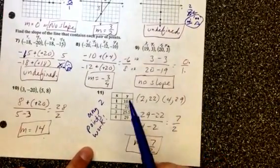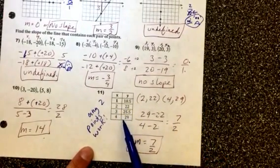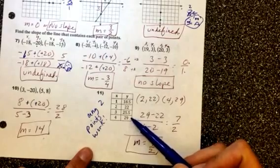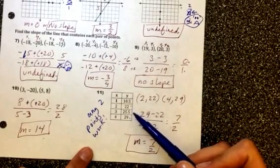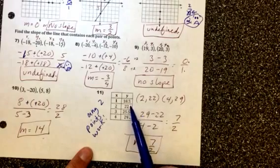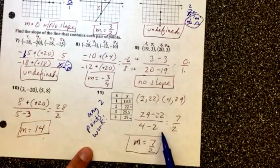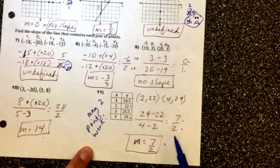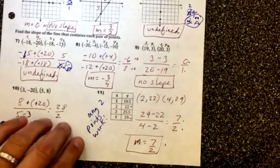11 might be a little tricky. They give you four points so any two points will work, and naturally being lazy like I am I chose the two that didn't have a decimal. So I chose (2,2) and (4,29), did all my math and ended up with 7 over 2. You can leave it in improper form.